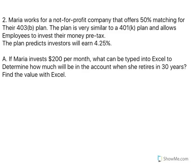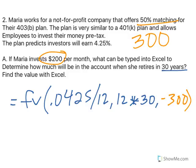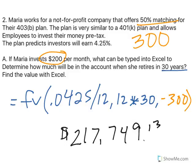Marina works for a not-for-profit company that offers a 50% match on their 403B. A 403B is very similar to a 401k and allows employees to invest their money pre-taxed. This plan predicts investors will earn 4.25%. If Maria invests $200 a month, what can be typed into Excel to determine how much will be in the account when she retires in 30 years? Future value: 4.25% annual divided by 12, then 12 times 30 in the middle. She puts in $200 and her company matches 50%, adding $100, so the total is $300 per month. Typed into Excel, you get $217,749.13.